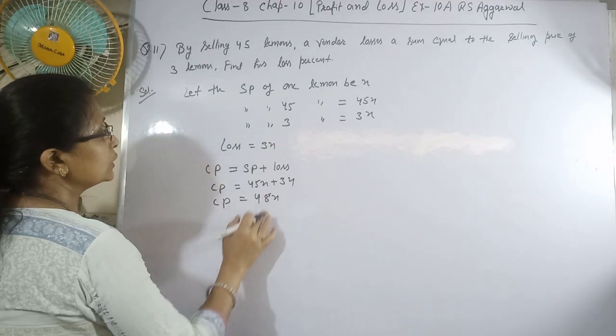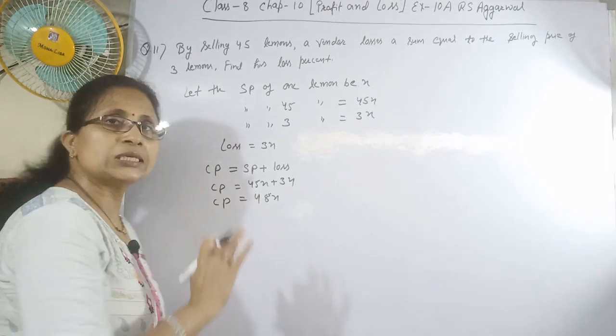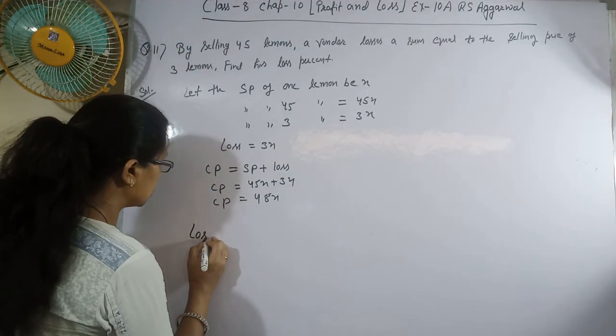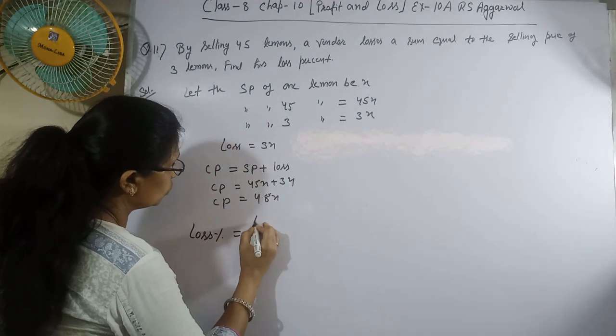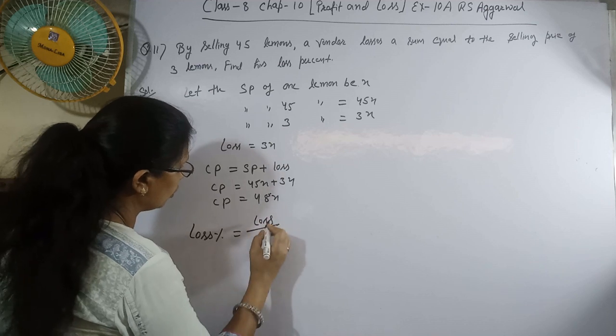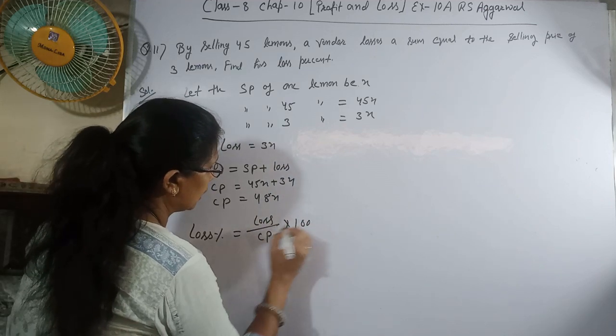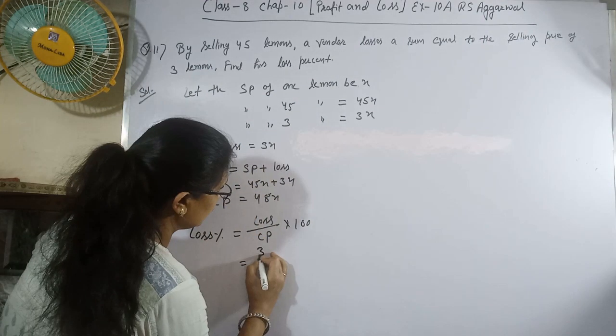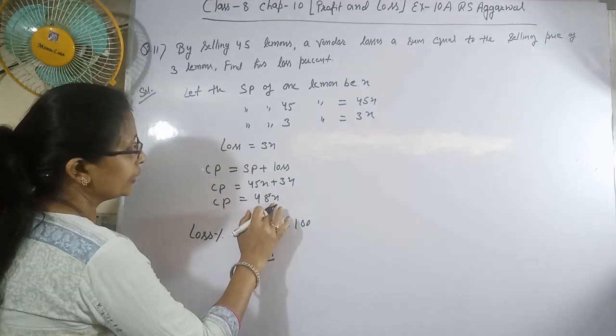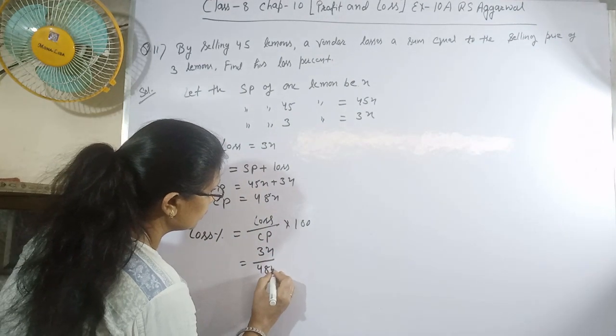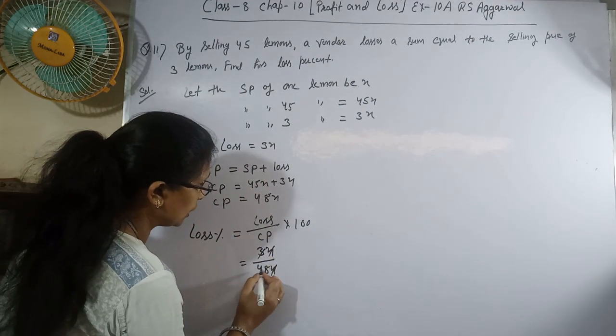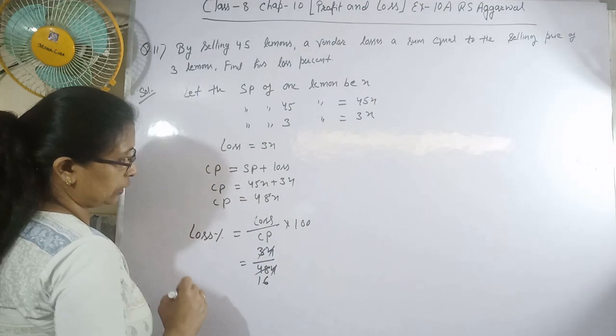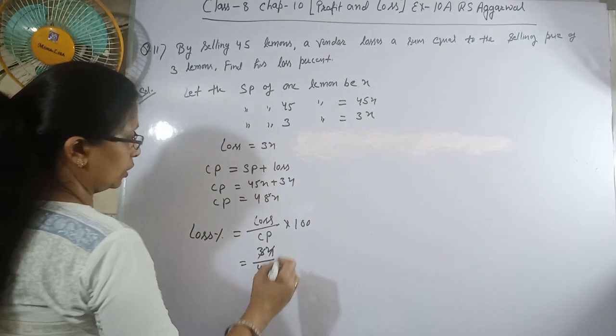Now we have both loss and CP. Loss percent equals loss divided by CP, multiplied by 100. Loss is 3x, CP is 48x. X cancels out, and we get 3/48, which simplifies to 1/16.